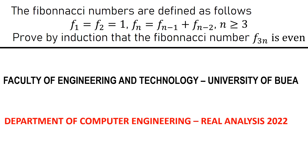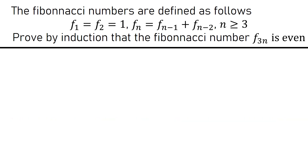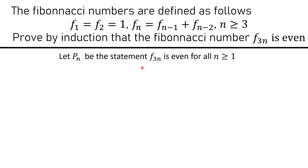Welcome to another video on our YouTube channel. Today we're looking at a question from the real analysis end-of-semester examination in the faculty of engineering and technology, department of computer and electrical engineering. The question asks us to prove by mathematical induction that the Fibonacci number f(3n) is even, given that f(n) = f(n-1) + f(n-2) for all n ≥ 3, with initial conditions f(1) = f(2) = 1.